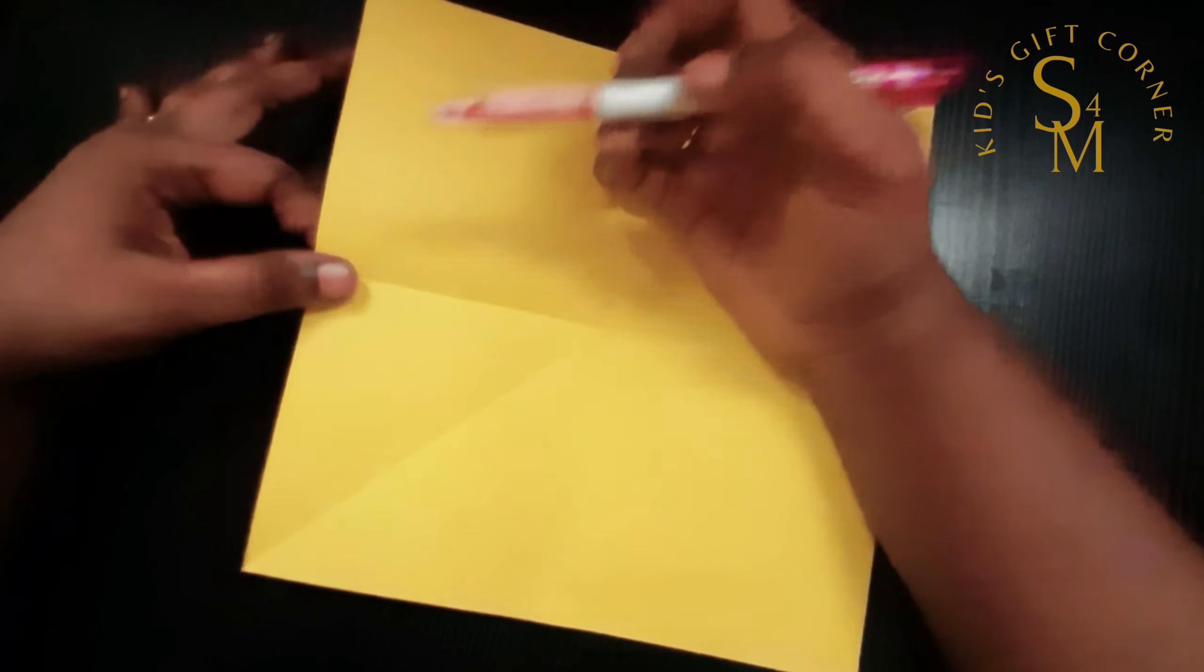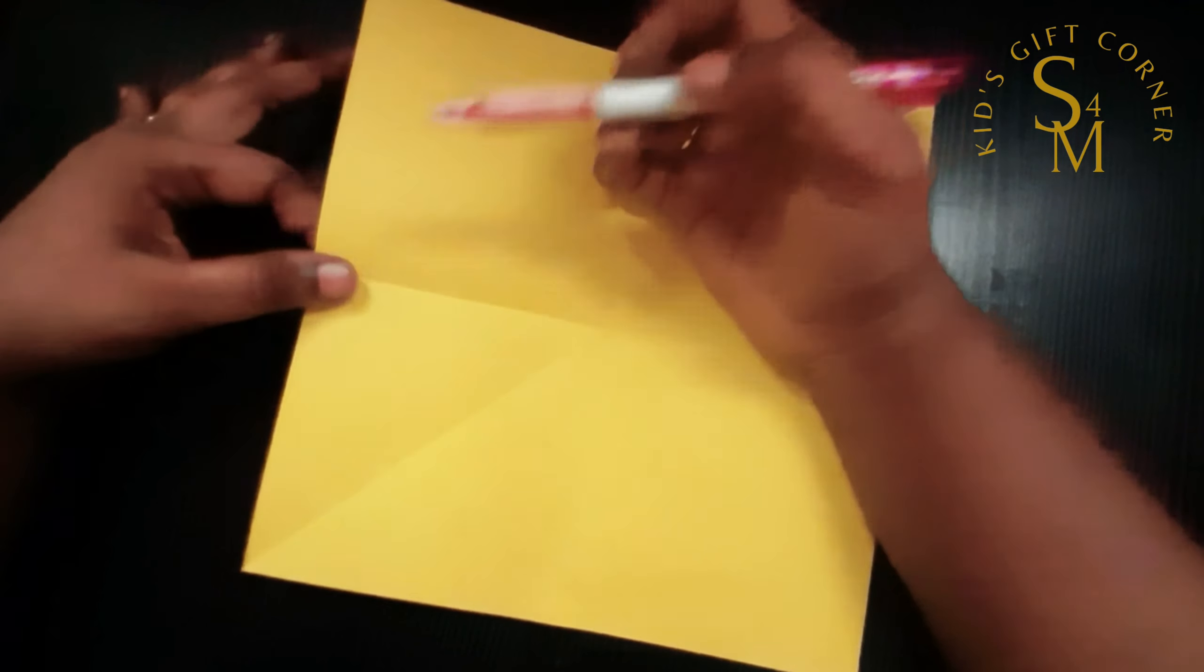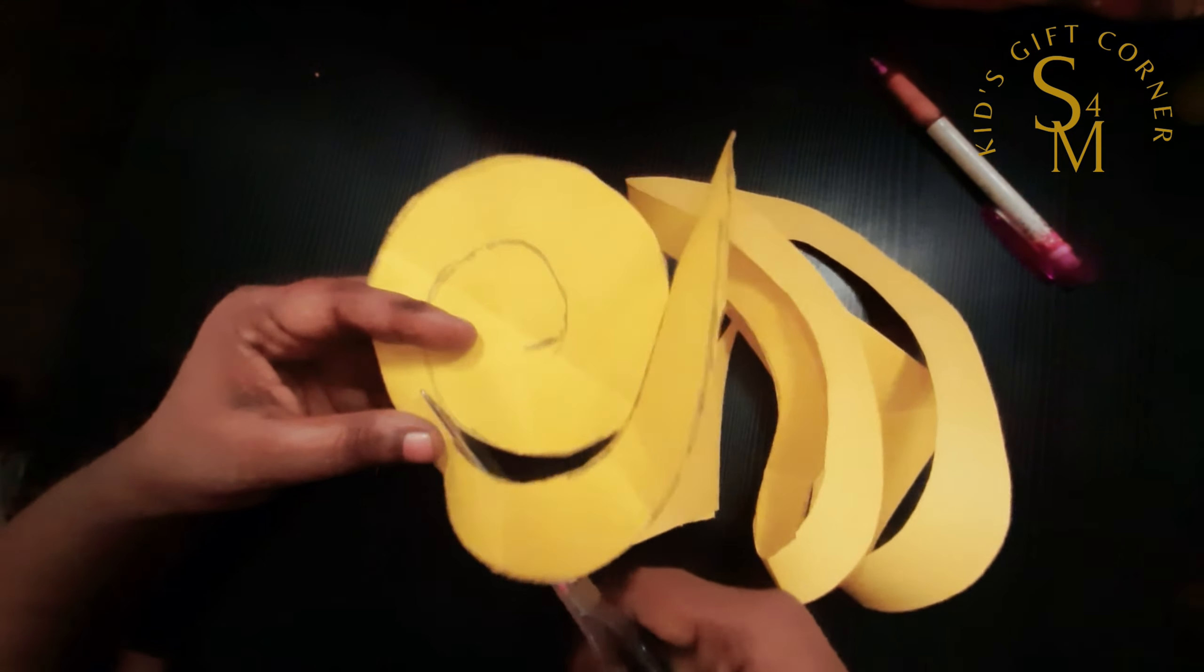Drop the line and cut the pen. Let's remove the corners of the waste. Now we are going to remove the flower.